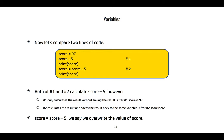Let's compare two lines of code. Line one: score = 97; score - 5; print(score). Line two: score = 97; score = score - 5; print(score). In line one we calculate the value but do not store it because there's no equal sign, so print(score) still shows 97. In line two we do affect the score variable, so print shows 97 minus 5, which is 92.